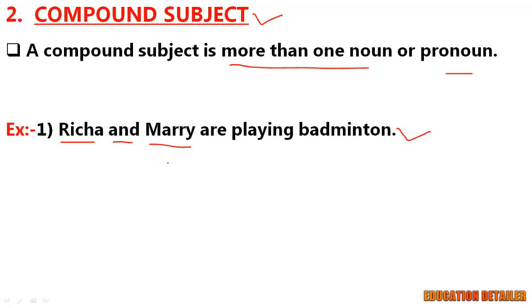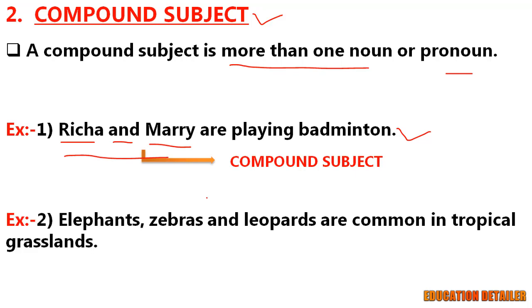As the subject here is more than one noun, therefore they are called the compound subject. In the next example: elephants, zebras, and leopards are common in tropical grasslands.